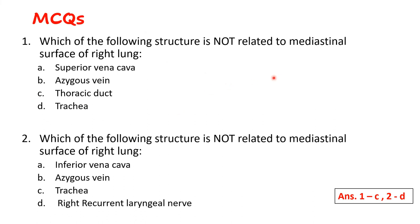Now the MCQs. Question 1: Which of the following structure is not related to mediastinal surface of the right lung? Options: superior vena cava, azygous vein, thoracic duct, trachea. The correct answer is thoracic duct, because it comes in relation to the mediastinal surface of the left lung. Question 2: Which of the following is not related to mediastinal surface of the right lung? Options: inferior vena cava, azygous vein, trachea, right recurrent laryngeal nerve. Remember: the right recurrent laryngeal nerve is not related to the right lung; the left recurrent laryngeal nerve comes in relation to the left lung but not the right one. Answers: Q1 = C, Q2 = D.